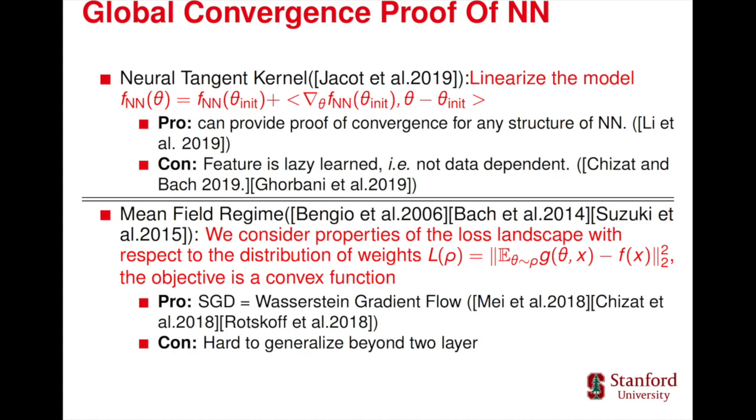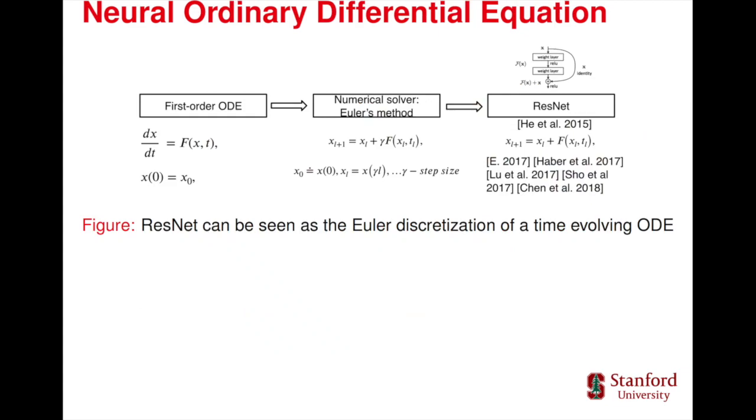To generalize mean field training beyond two layers, we also brought the idea from recent line of research known as neural ODE with the observation that ResNet can be seen as the Euler discretization of a time-evolving ODE.